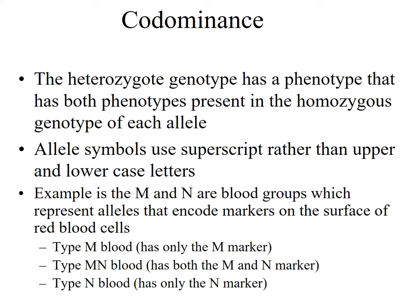Sometimes the phenotype of a heterozygote actually shows both the phenotypes that would be present in the homozygous genotype of each of the individual alleles. It is not between them — both of them are being exhibited. An example of this would be the MN blood group, and this is what is referred to as codominance. The MN blood group is a blood group in which there's a particular marker on your red blood cell surface. If you have the M allele, you have the M marker on your red blood cells, and if you have the N allele, you have the N marker.